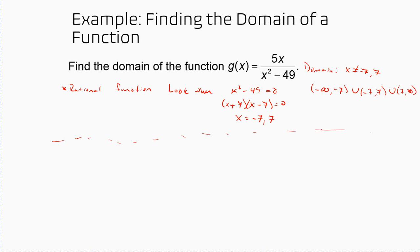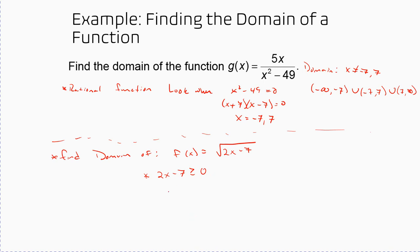Let's find the domain of f(x) = √(2x - 7). You can't have a negative underneath the radical, so the expression under the radical must be greater than or equal to zero. Solving 2x - 7 ≥ 0: add 7, divide by 2, giving x ≥ 7/2. So the domain is [7/2, ∞). Anything less than 7/2 would give a negative under the radical.